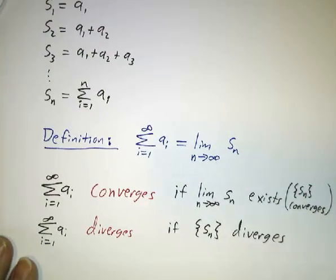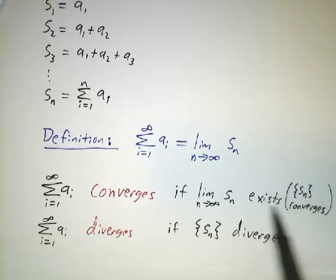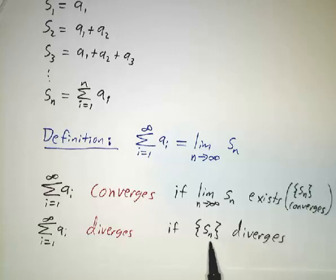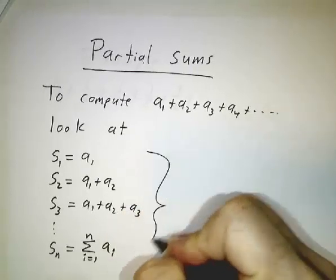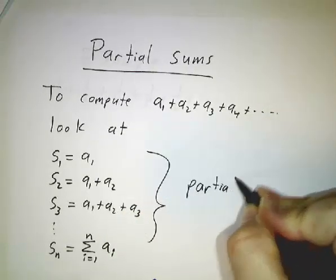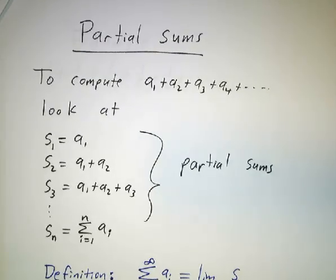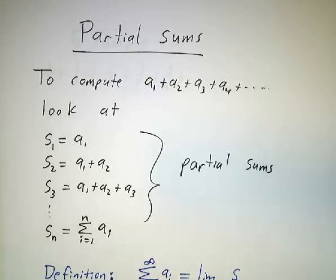We say the infinite sum converges if that limit exists — in other words, if the sequence S1, S2, S3, S4, and so on converges, then the series A1 plus A2 plus A3 plus A4 converges. If the sequence of partial sums diverges, then the infinite sum diverges. All of these S values are called partial sums, and Sn is the nth partial sum. Think of partial sums as running totals — how much do we have so far — and we look at more and more of them.